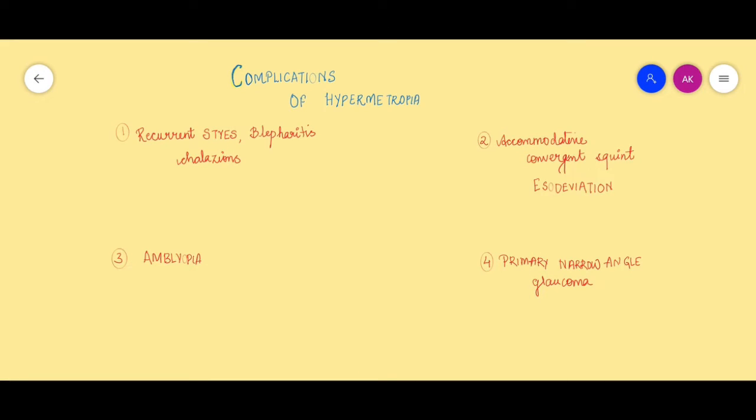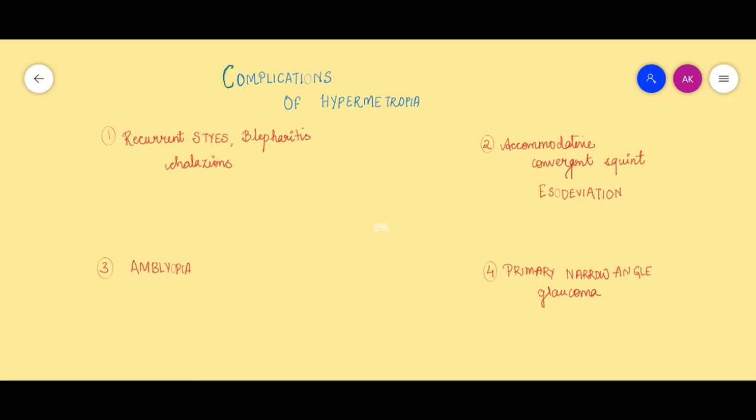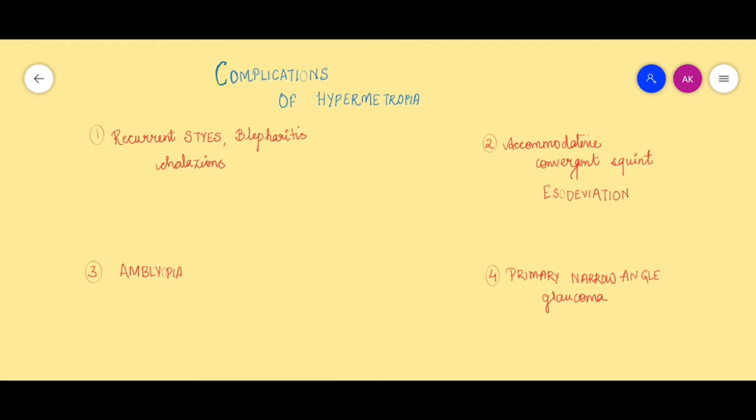Good morning and welcome to Inside Clinic Lectures. I welcome you to a video on complications of hypermetropia. There are basically four main complications of hypermetropia if left untreated. The first one is recurrent styes, blepharitis, and chalasia.